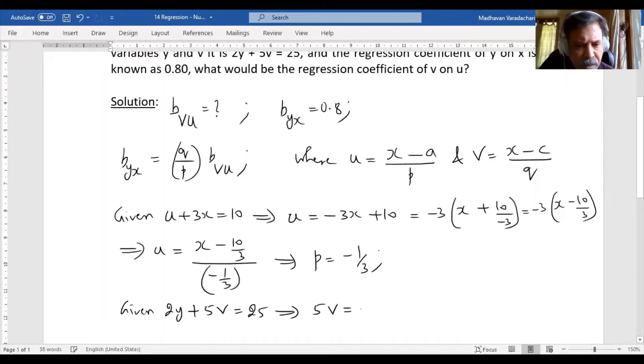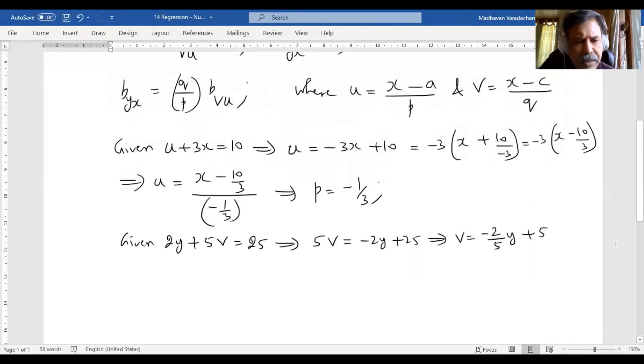Which means v is minus 2 by 5 times y plus 25 by 5. 25 by 5 is 5. Now again, in this I should take this negative 2 by 5 outside.